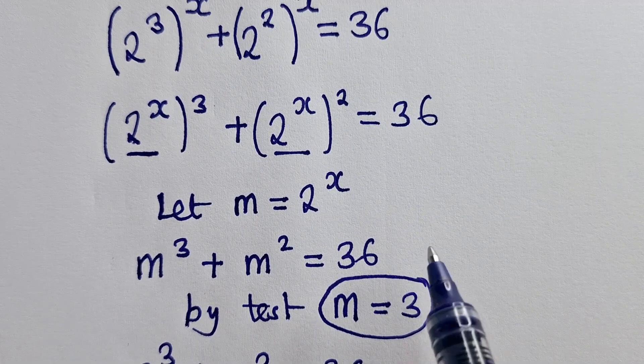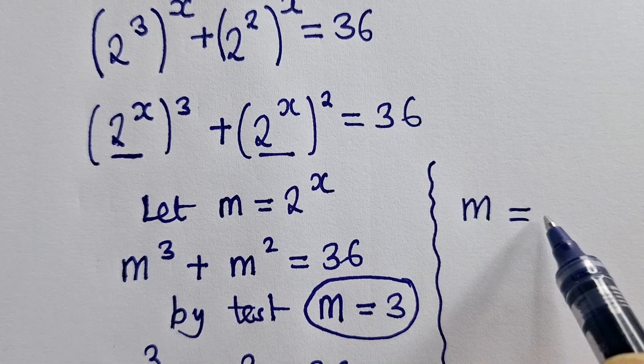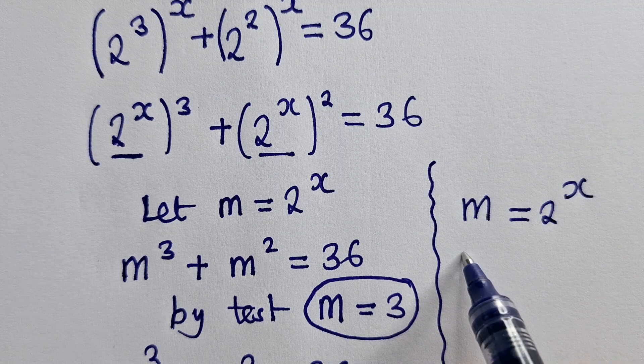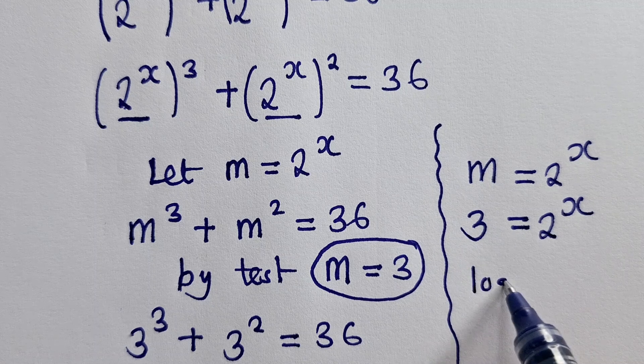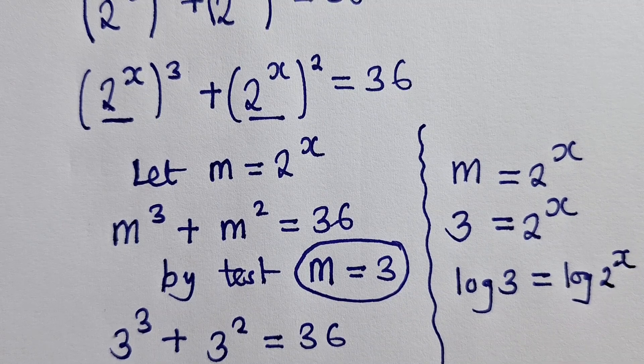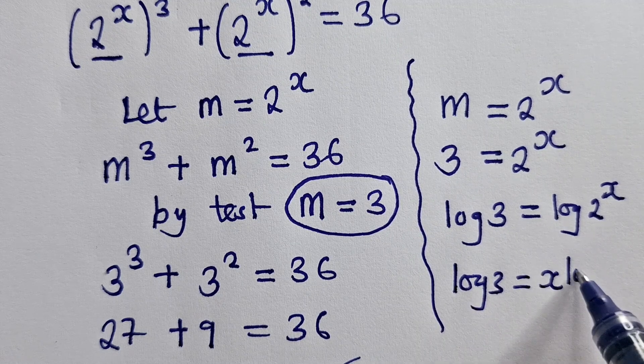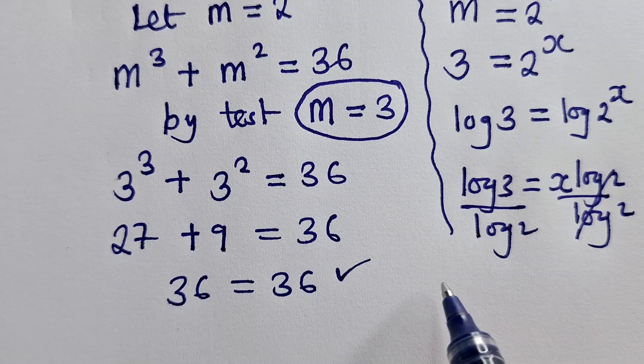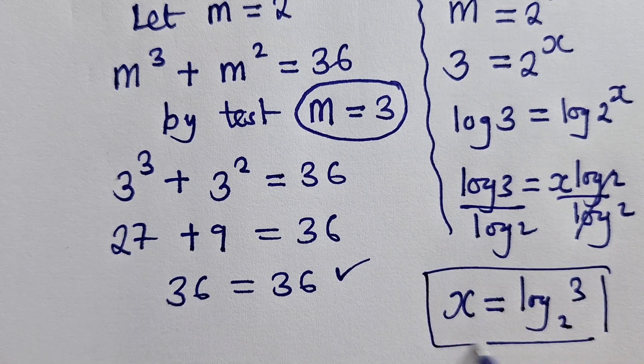So once we get this 3, we move back, or we go back to this stage, where we said let m be equal to, okay, m equal to 2 power x. So now we are going to substitute the value of m, which is a 3, right here where m is. That would be 3 is equal to 2 power x. We introduce the logs, okay? So this is log over 3 is equal to log over 2 power x. Okay, so now from this stage, we can say log of 3 is equal to x log over 2. We divide by log 2 log 2. These two go, the value of x is coming out to be equal to log base 2 over 3. So this is the value of x.